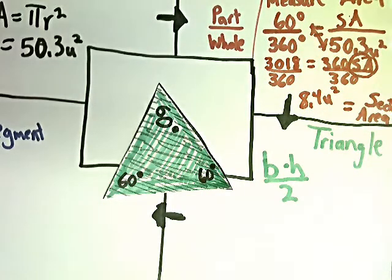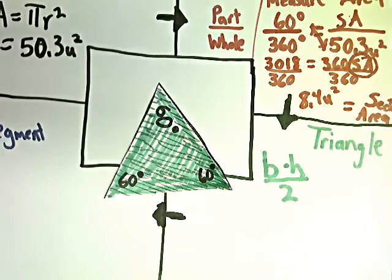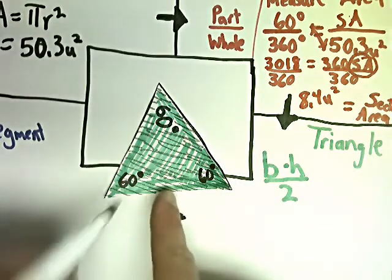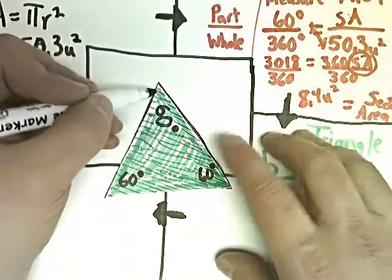So what I'm going to do is create what's called a perpendicular bisector. The bisector part means I'm going to break one of the angles into two parts, and they're equal.